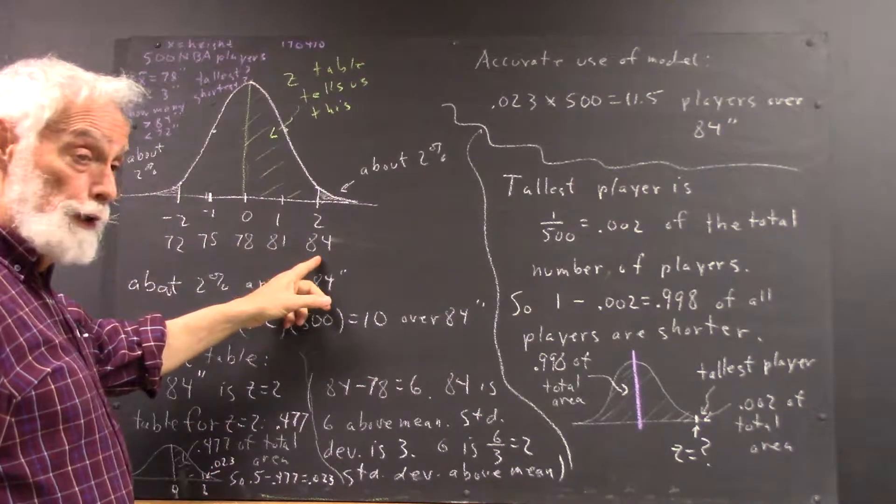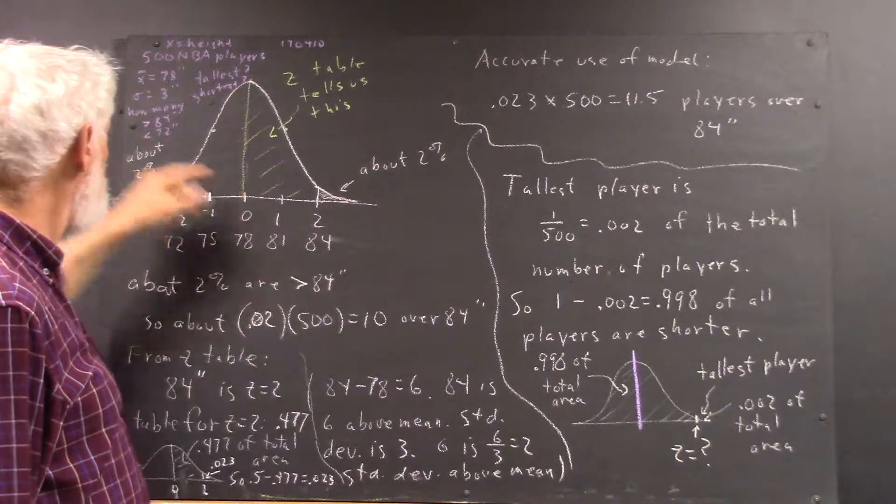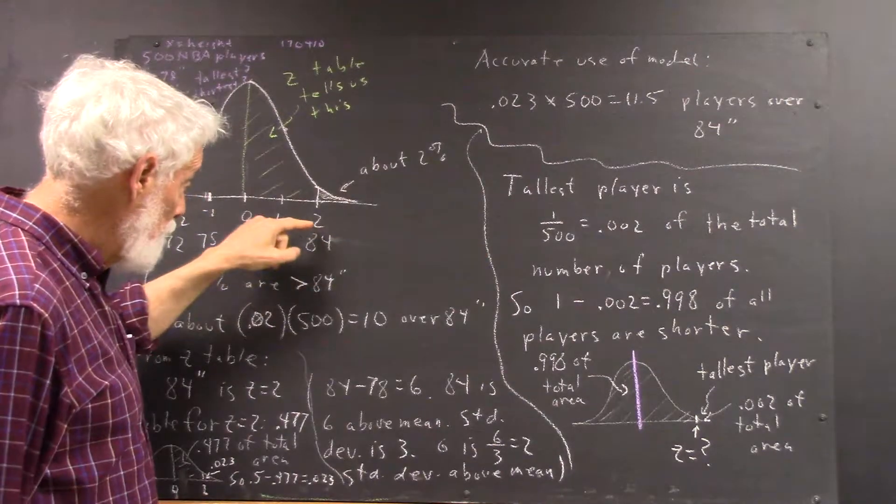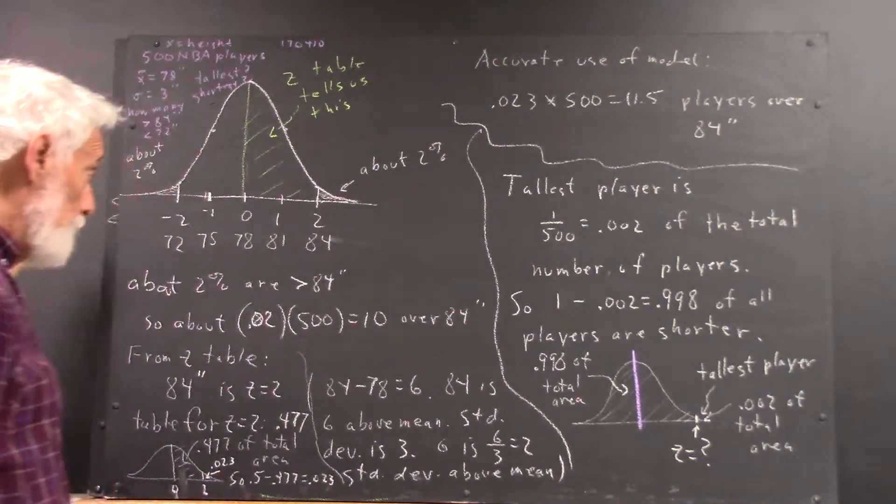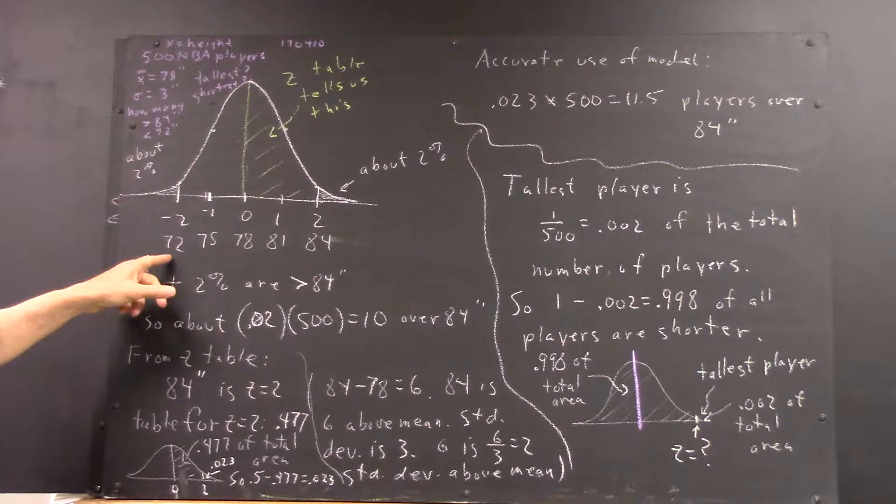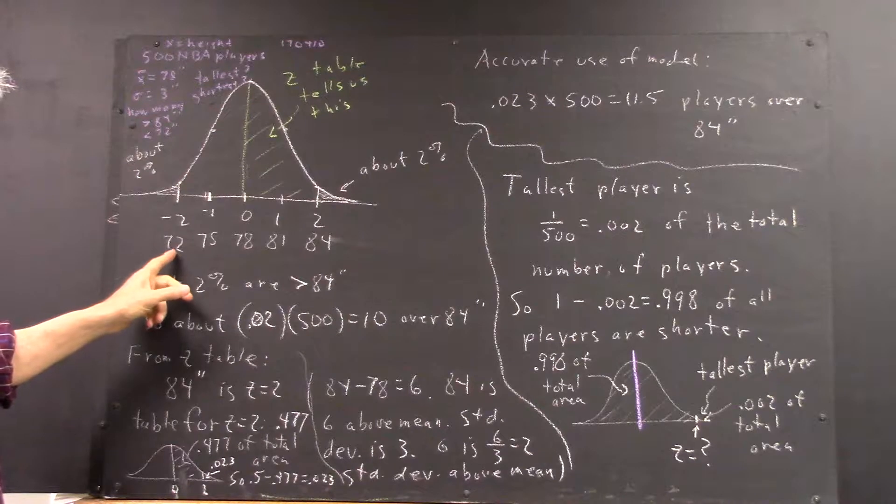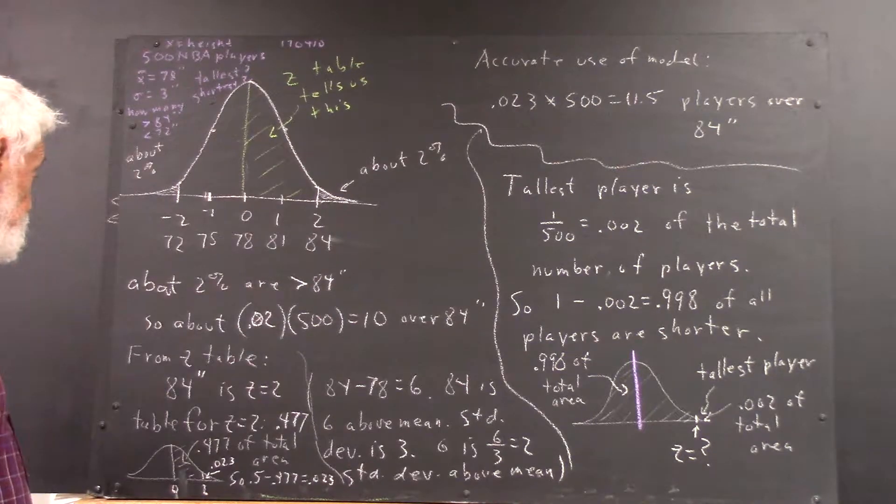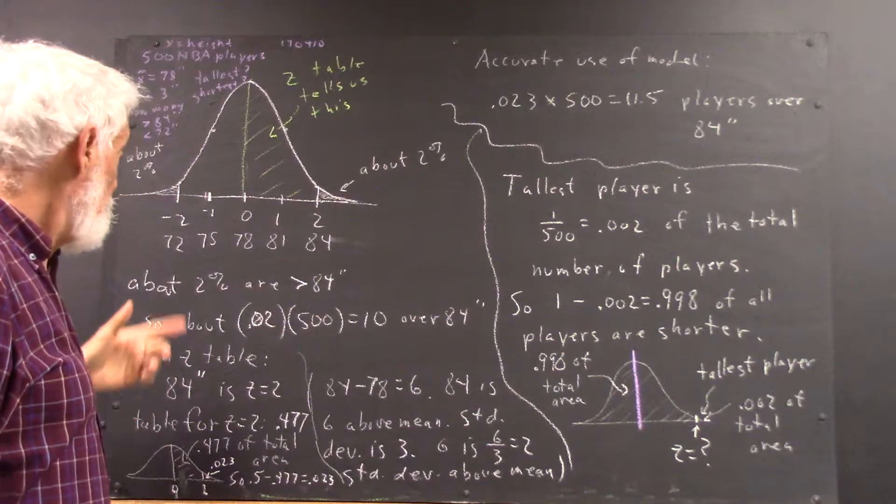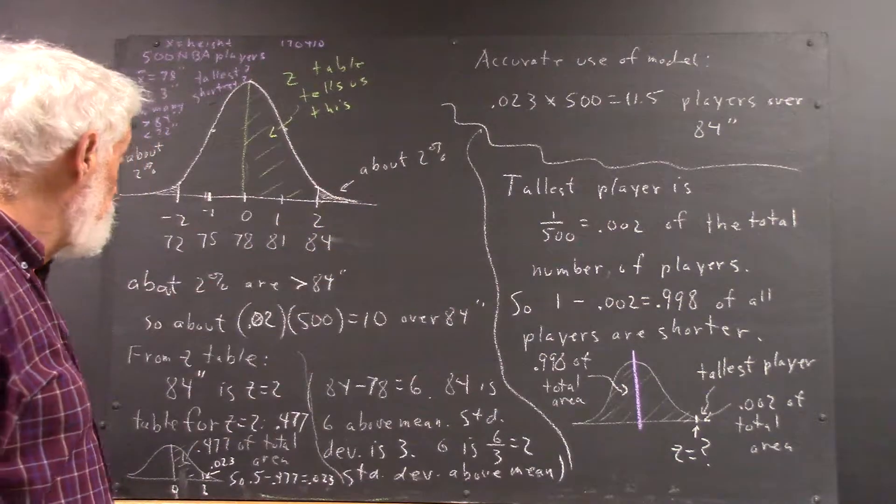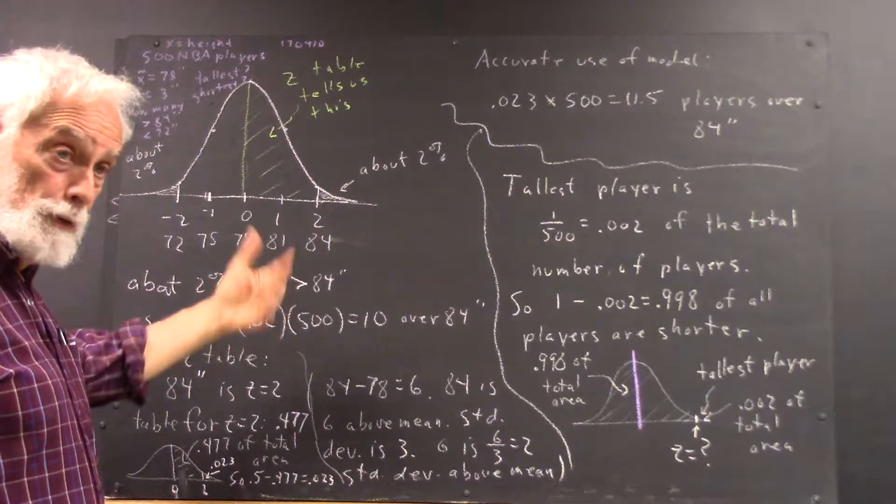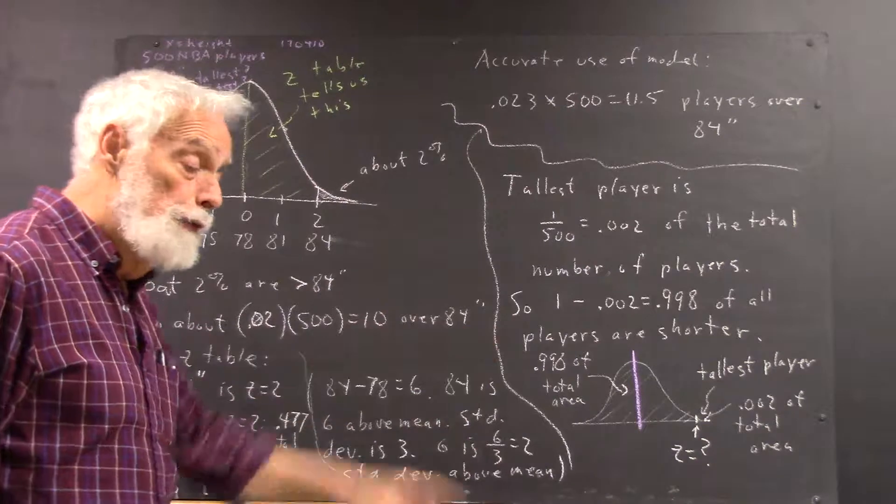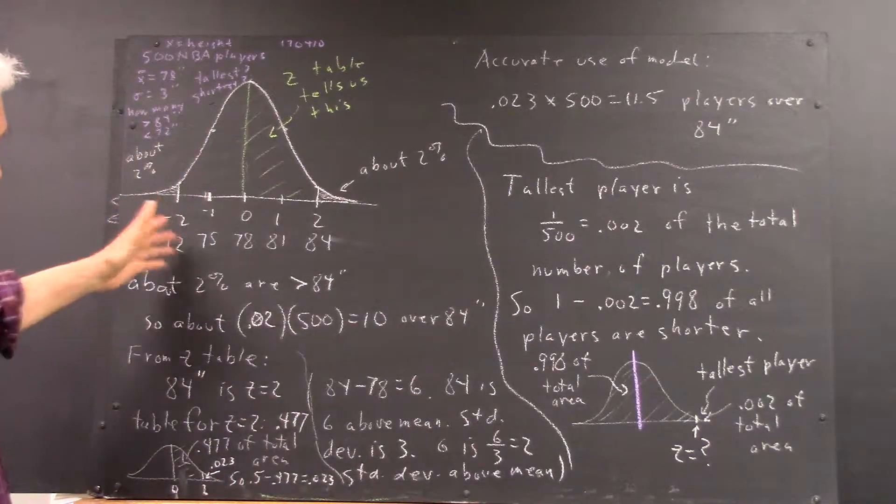We see that 84 inches just happens to correspond to z equals 2, so if we want to know how many are greater than 84 inches, it's going to be the number out past z equals 2. Similarly, 72 inches, less than 72 inches would correspond to the area to the left of 72, which is the same as the area to the left of z equals negative 2. Using our knowledge that about 2% go out beyond z equals 2, we say about 2% are higher than 84 inches, so about 2% of 500, which is 10, are over 84 inches. We would come up with the same number for under 72 inches.